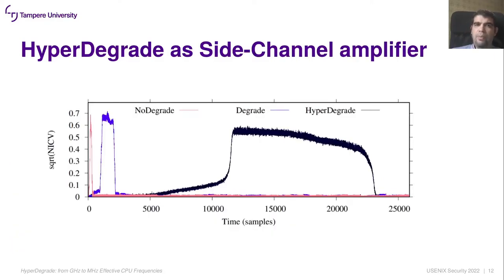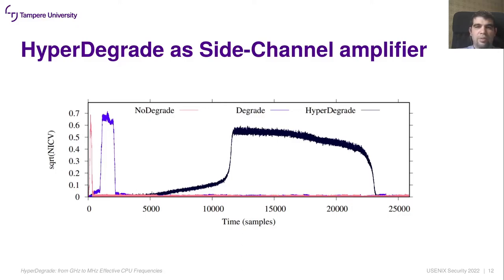Previously we focused on the slowdown impact of HyperDegrade, so its impact as a side channel amplifier follows. We addressed this question twofold. First, we employed a statistical leakage assessment tool — TVLA — to statistically validate that HyperDegrade increases the number of points of interest in a side channel trace. This is shown in the experimental results figure, where the HyperDegrade curve has many more samples at high correlation coefficients on the y-axis.